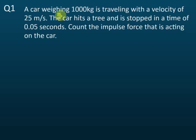A car weighing 1000 kg - now we say weighing 1000 kg means this is a mass, not the weight. Sometimes they may use the word weighing. A car weighing 1000 kg is traveling with a velocity of 25 meters per second. So let's write this information. The mass...